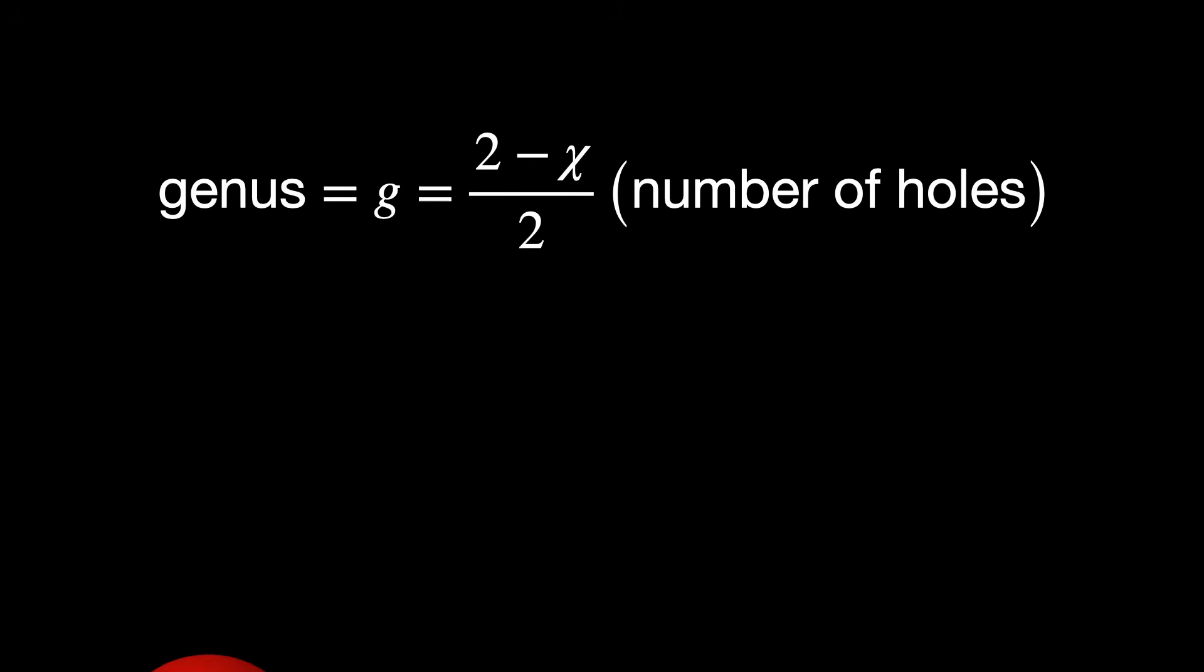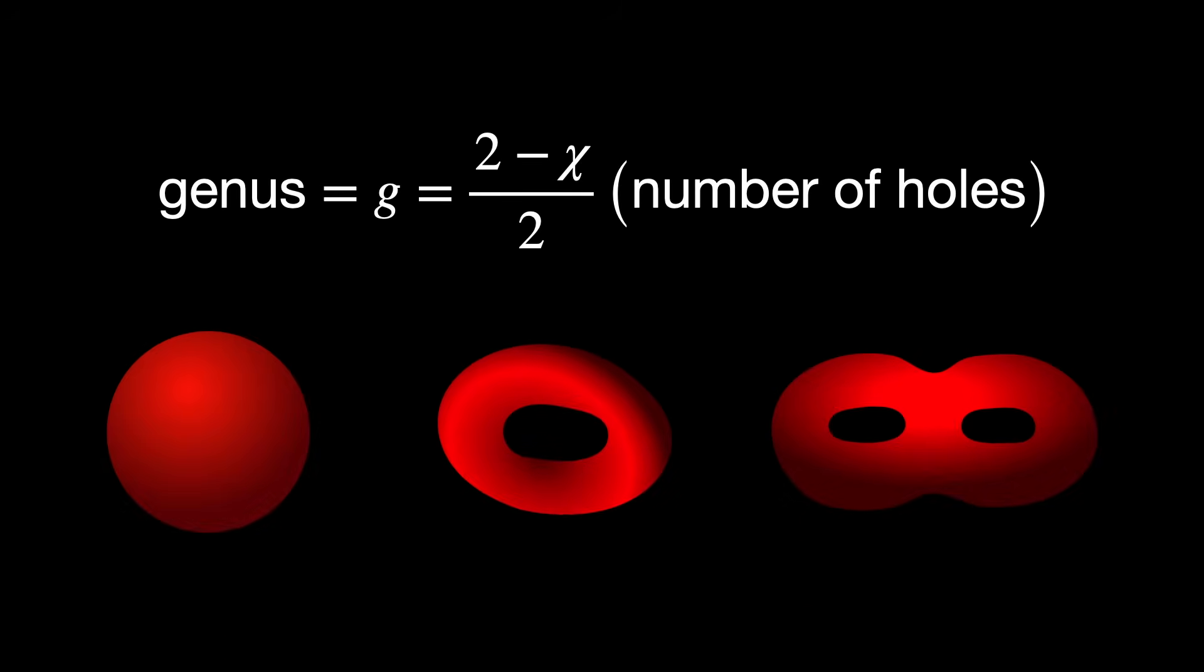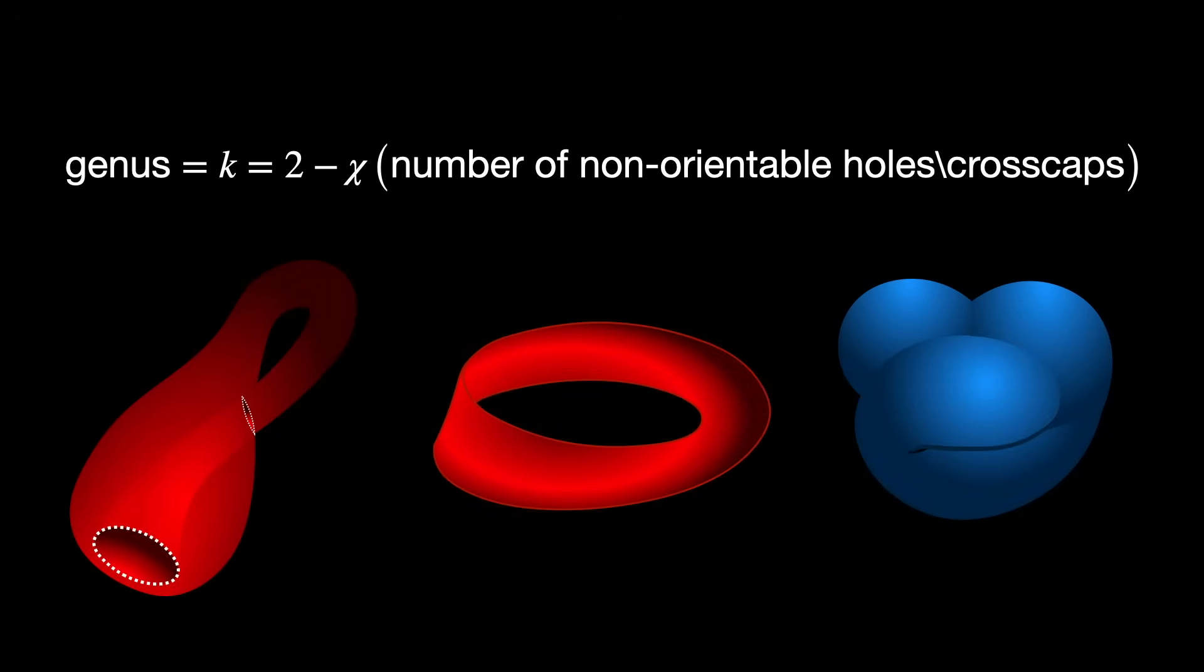Am I missing something here? Let us know in the comment section below. Now let's talk about another very important topological invariant, the genus. The genus of an orientable surface is calculated as two minus the Euler characteristic divided by two, so the number of holes. The genus of a non-orientable surface is calculated as two minus the Euler characteristic, so the number of non-orientable holes, or cross caps.